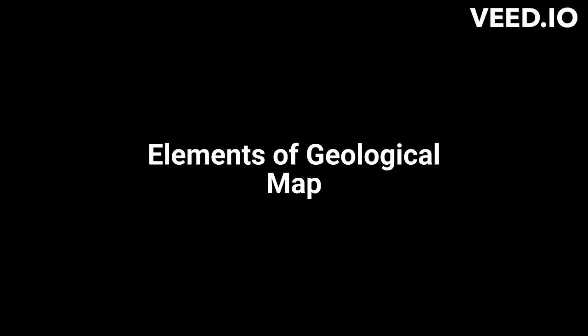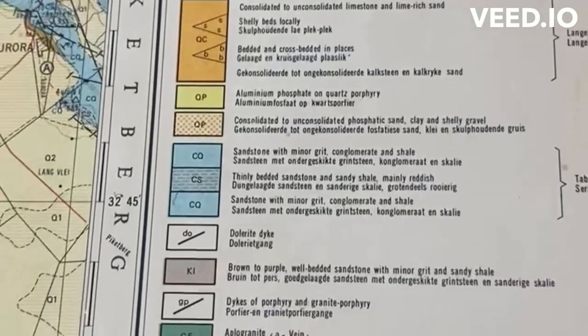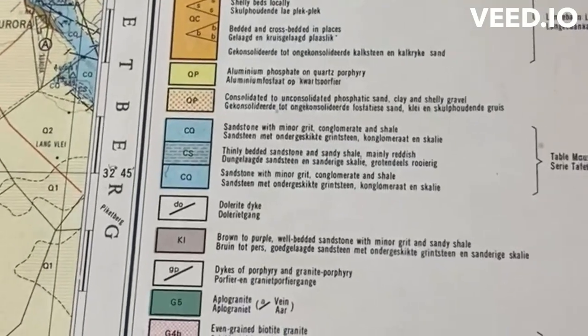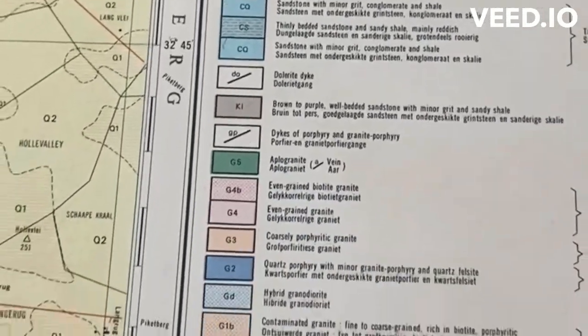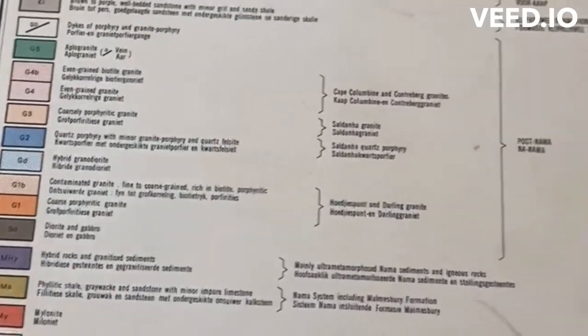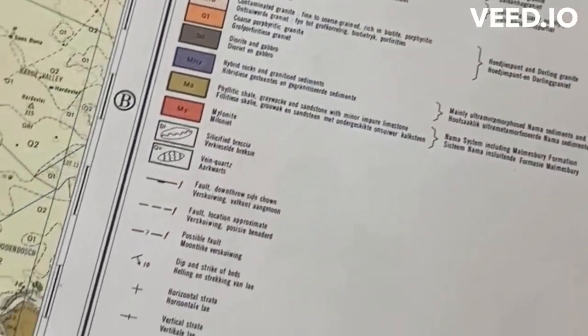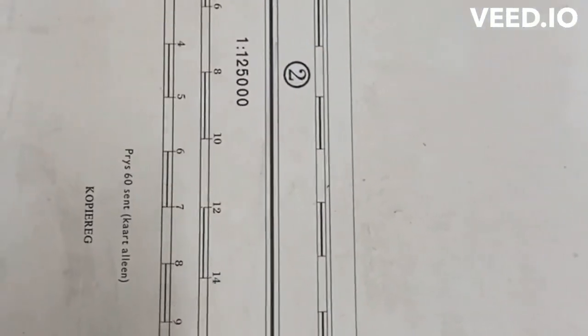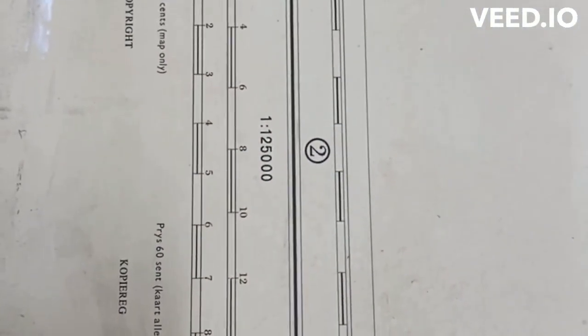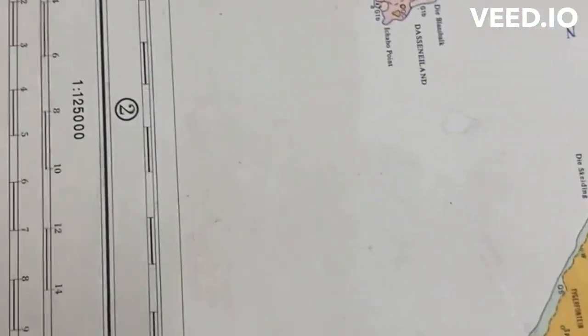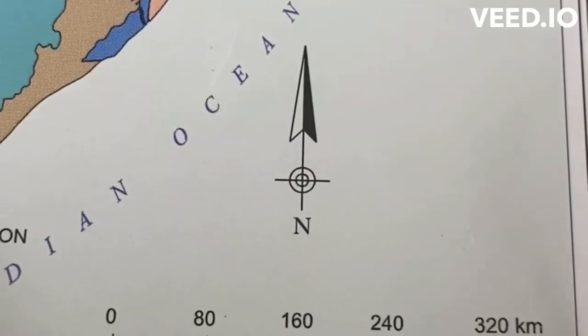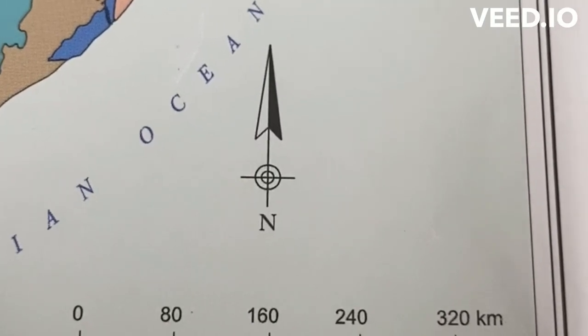Geological maps, like any other maps such as topographic maps, must have a scale, legends, and north arrow. Legend or Key is a list or diagram that explains the symbols and colors used on the map, including rock formations, geological structures, and other features. Scale is a ratio or bar scale that indicates the relationship between distances on the map and actual distances on the ground. North arrow is a symbol that shows the orientation of the map, usually pointing to true north.